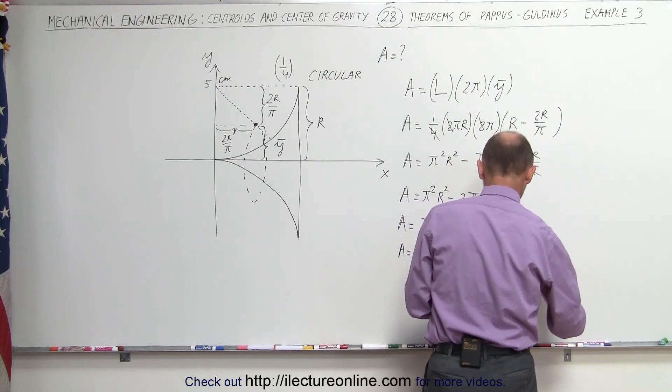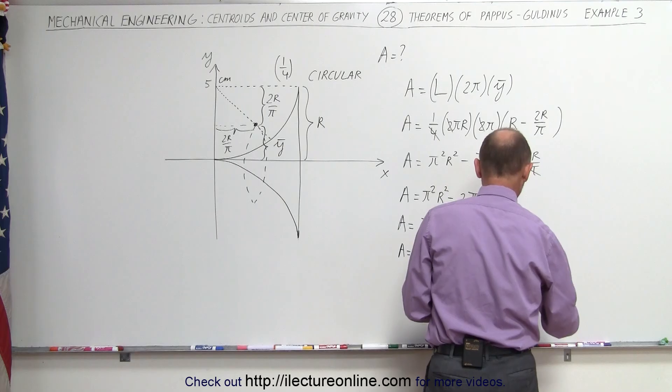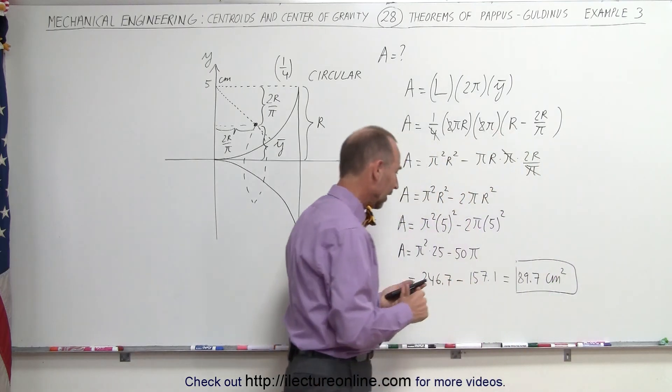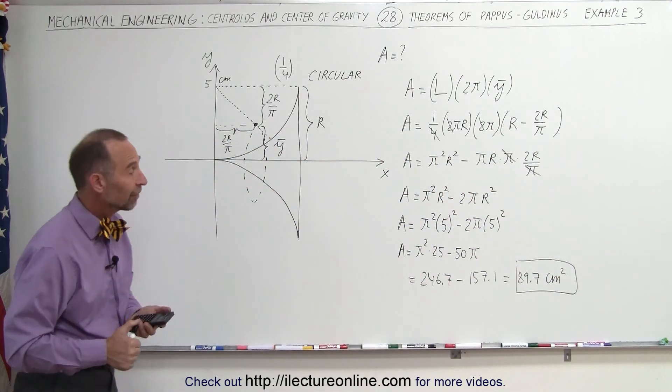89.7 centimeters squared. Since the radius was 5 centimeters, then the area of that would be 89.7 centimeters squared.